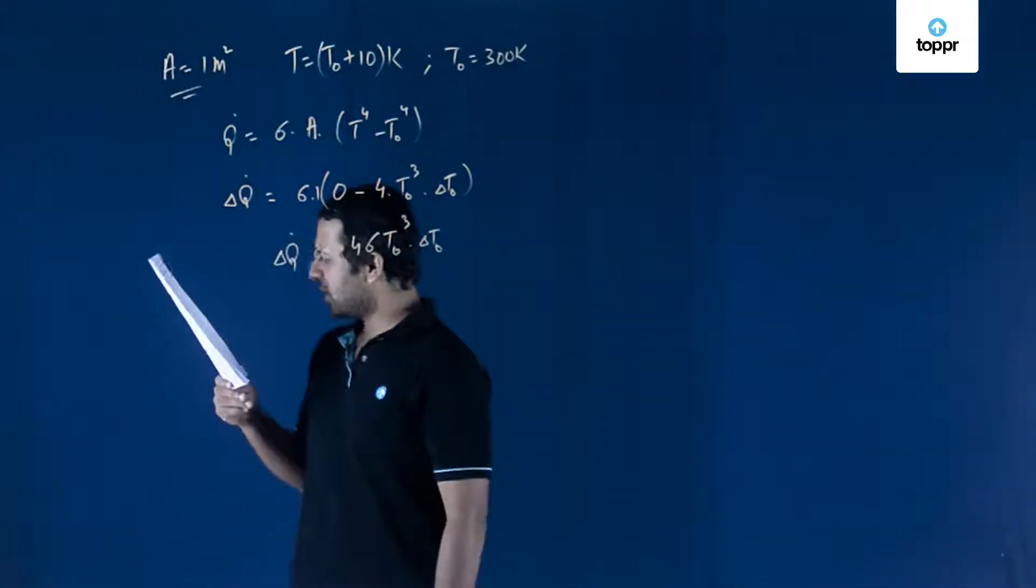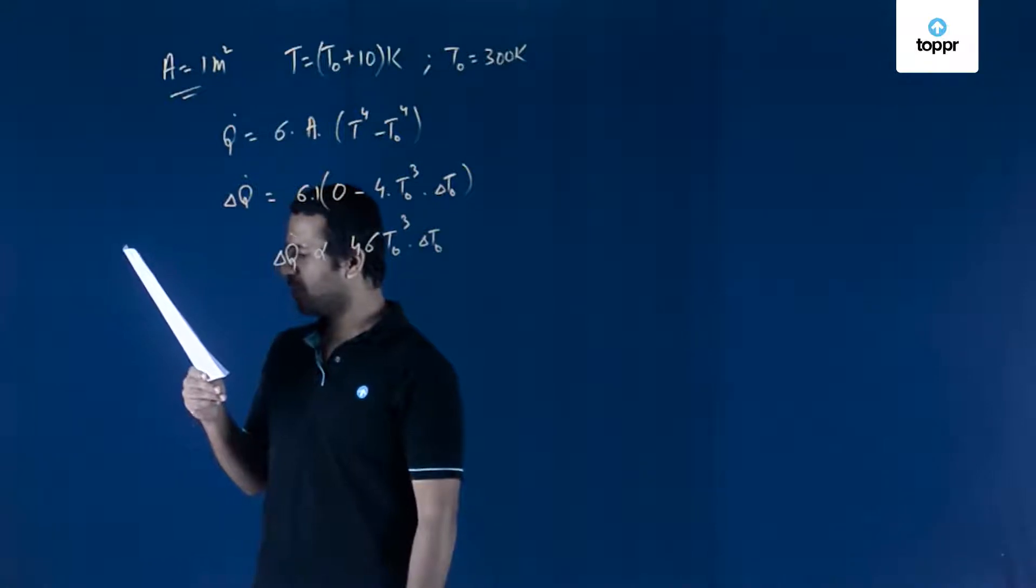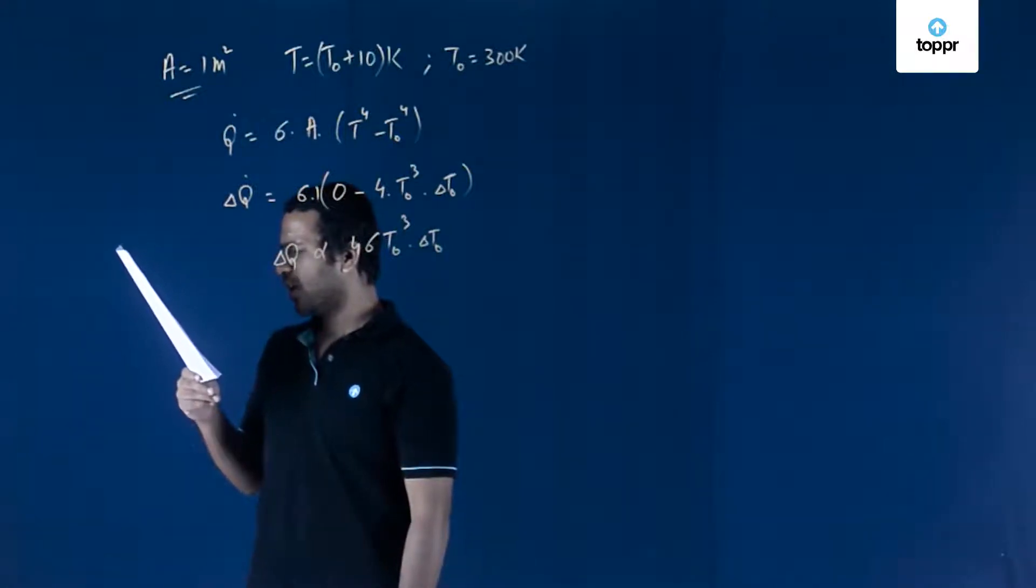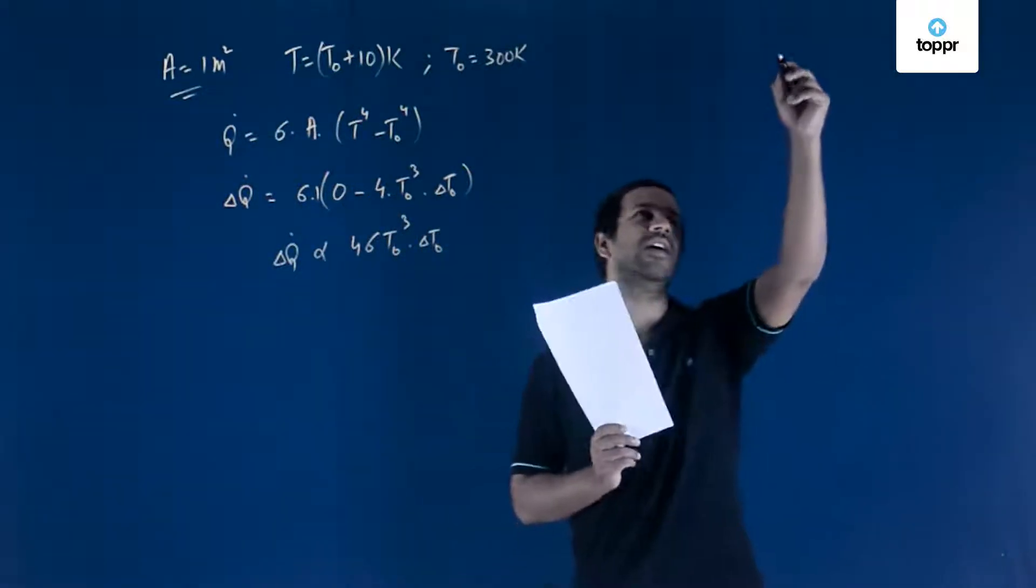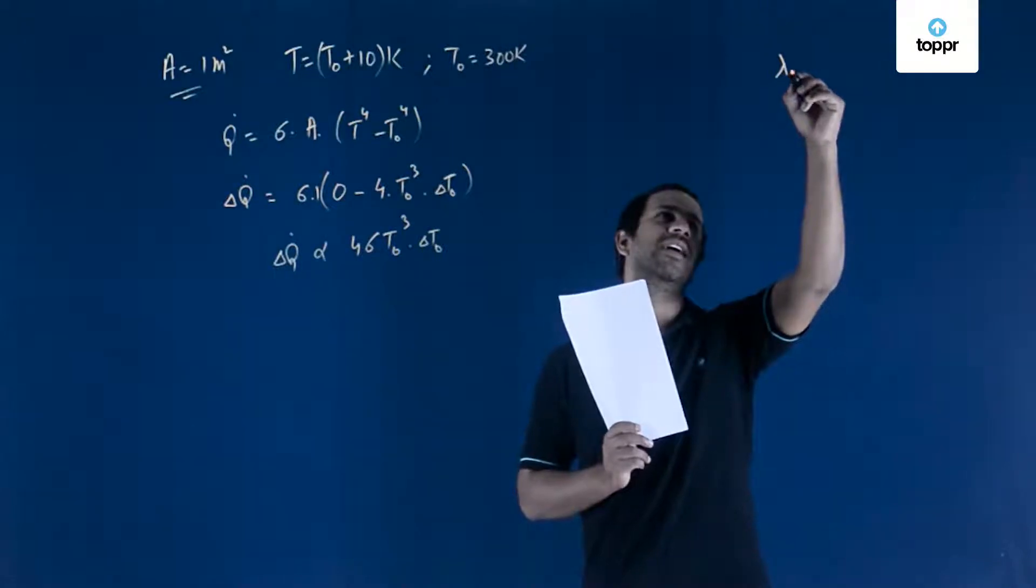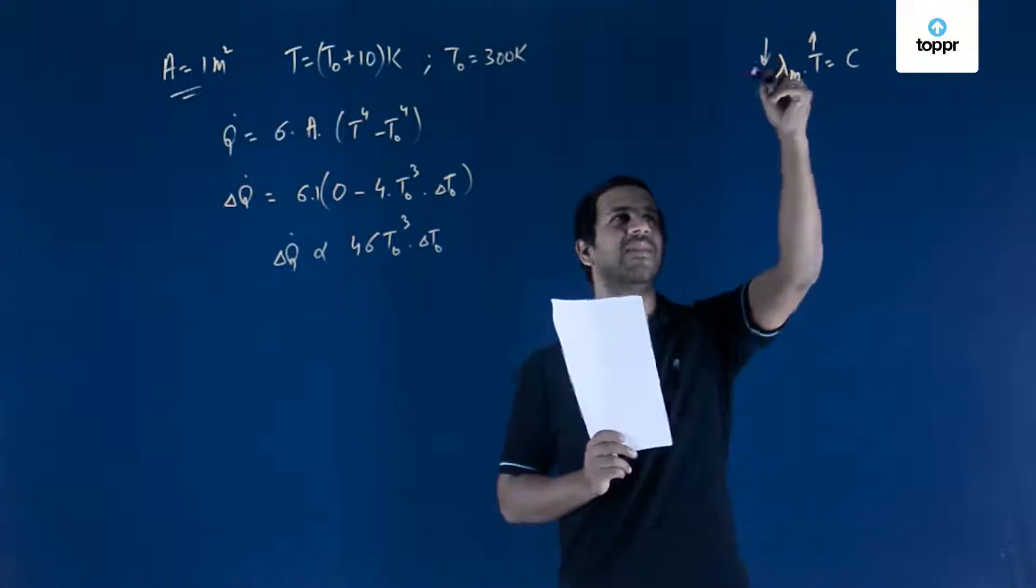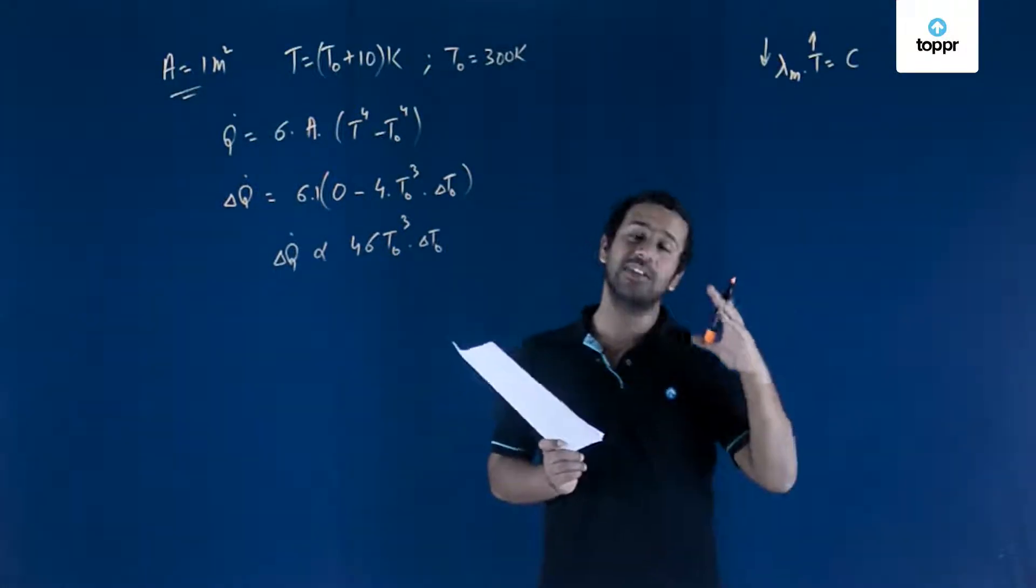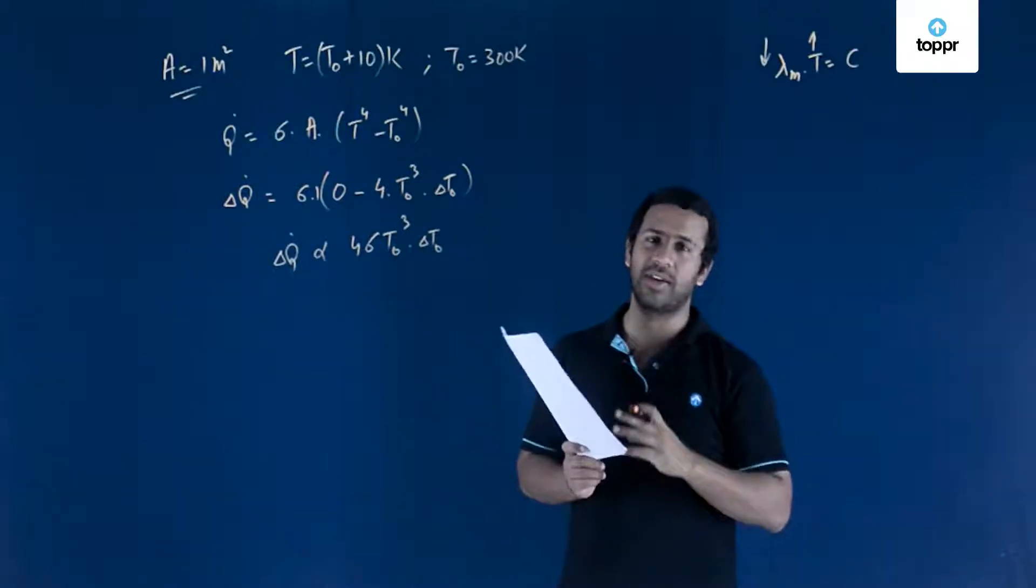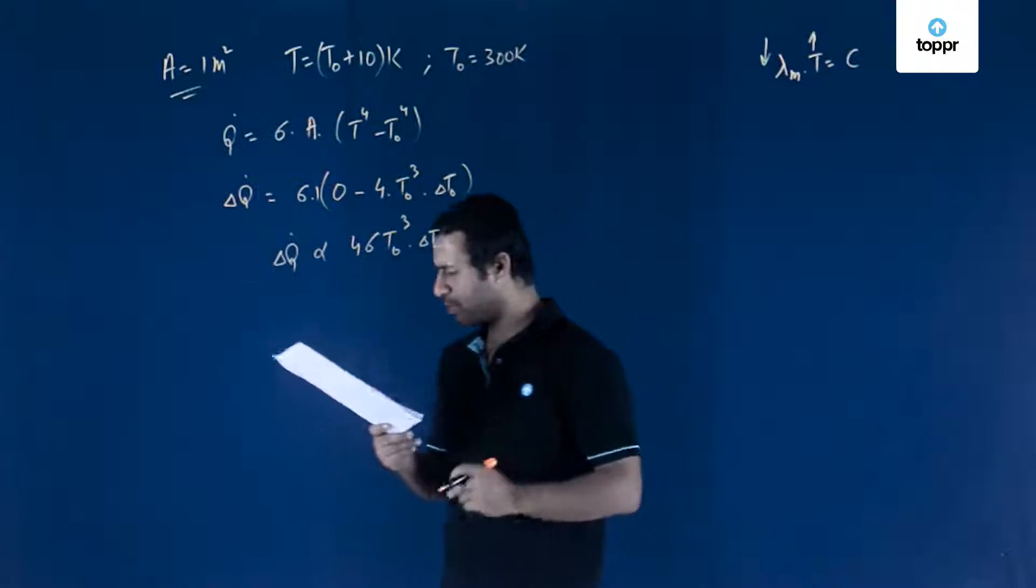The second option was that if the body temperature rises significantly, then the peak in the spectrum of electromagnetic waves radiated by the body would shift to longer wavelengths. You know Wien's displacement law: lambda M into T is equal to a constant. So as T increases, lambda will decrease. As temperature increases, wavelength will shift to smaller wavelength. It shifts to higher frequency. That is why option B is incorrect.